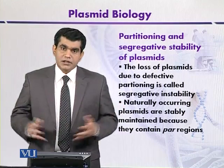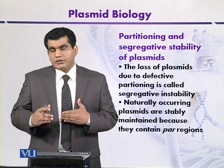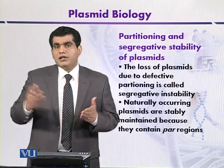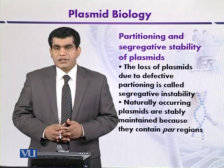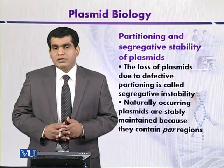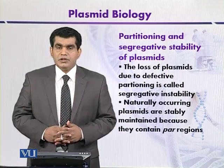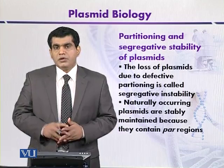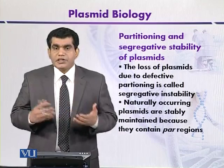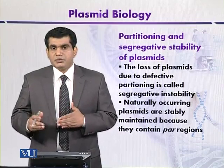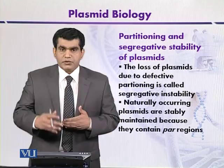On the other hand, if the par region from another natural plasmid like PSC-101 is introduced into an artificially constructed plasmid like PBr322, then the plasmid can be stably transferred into daughter cells.